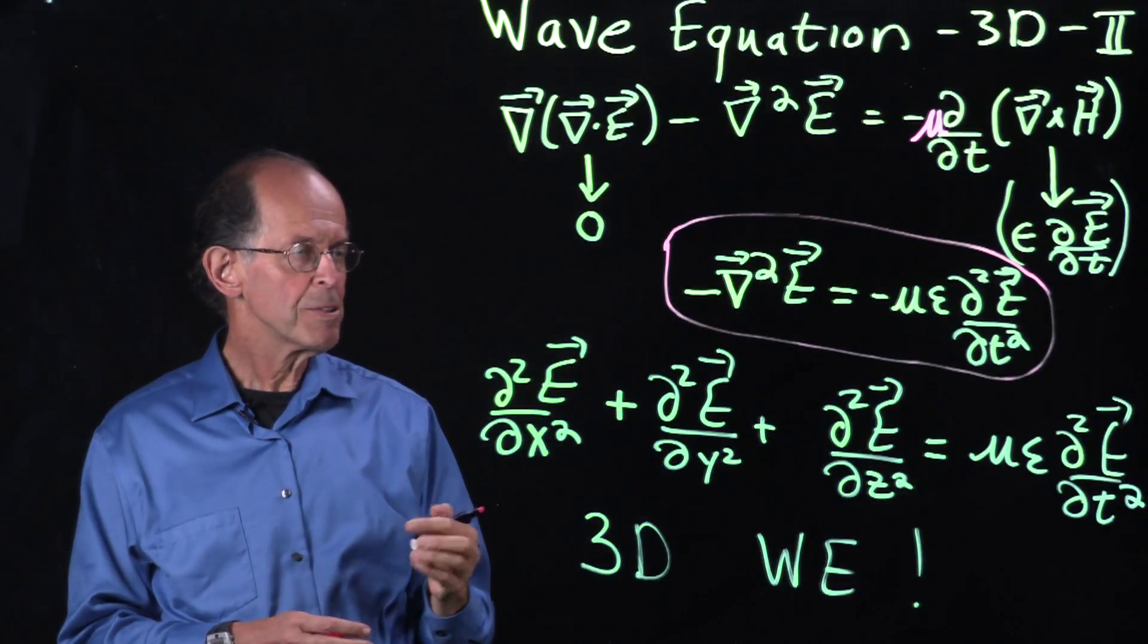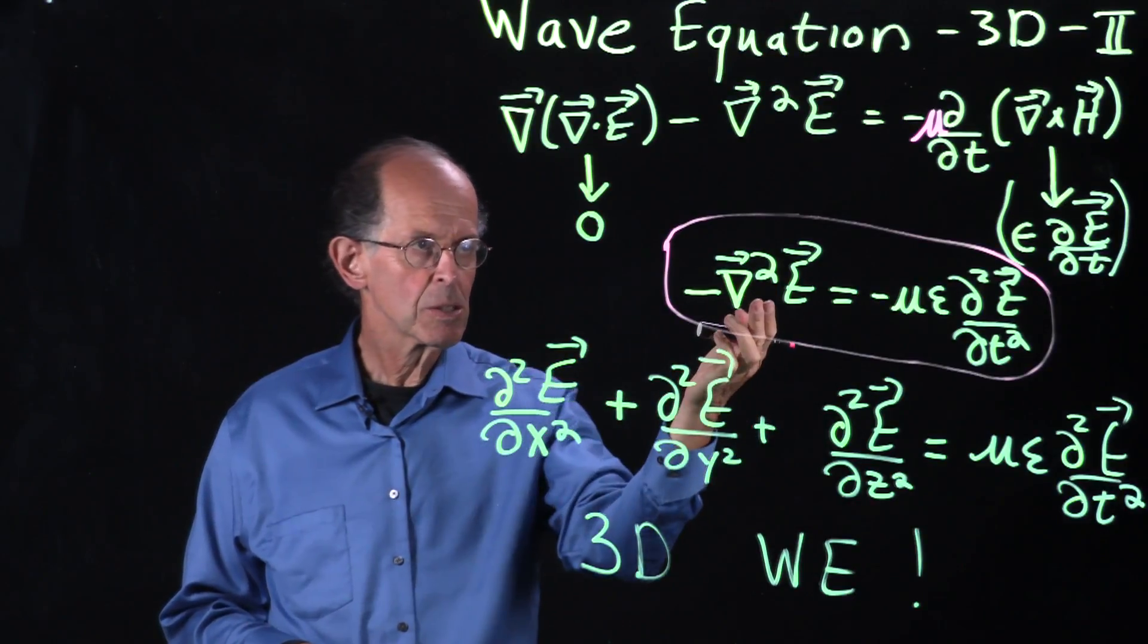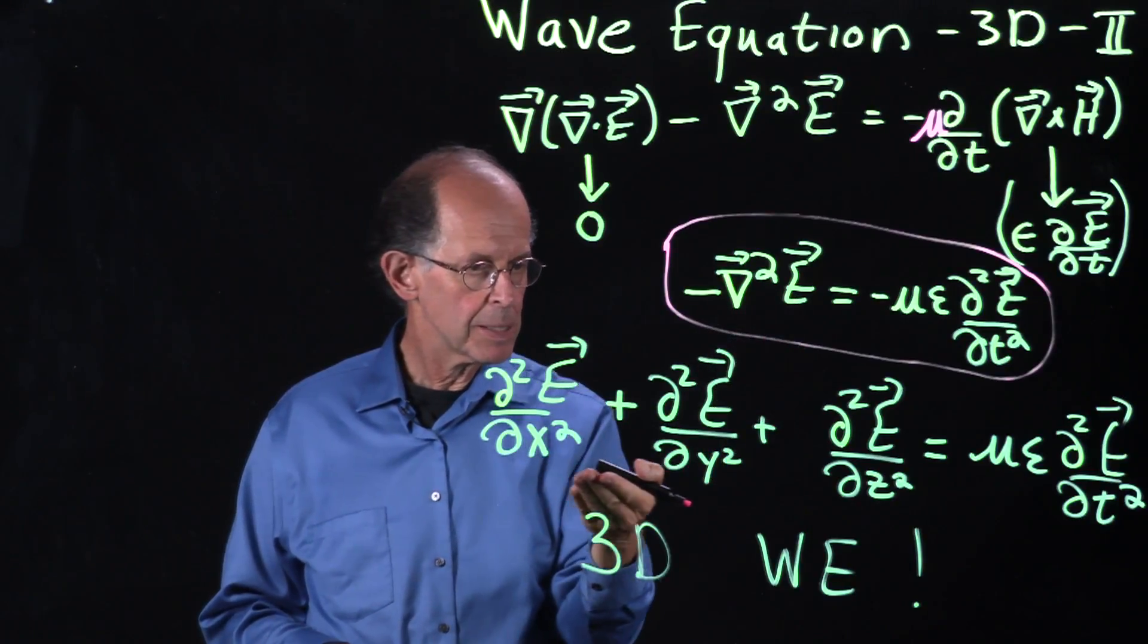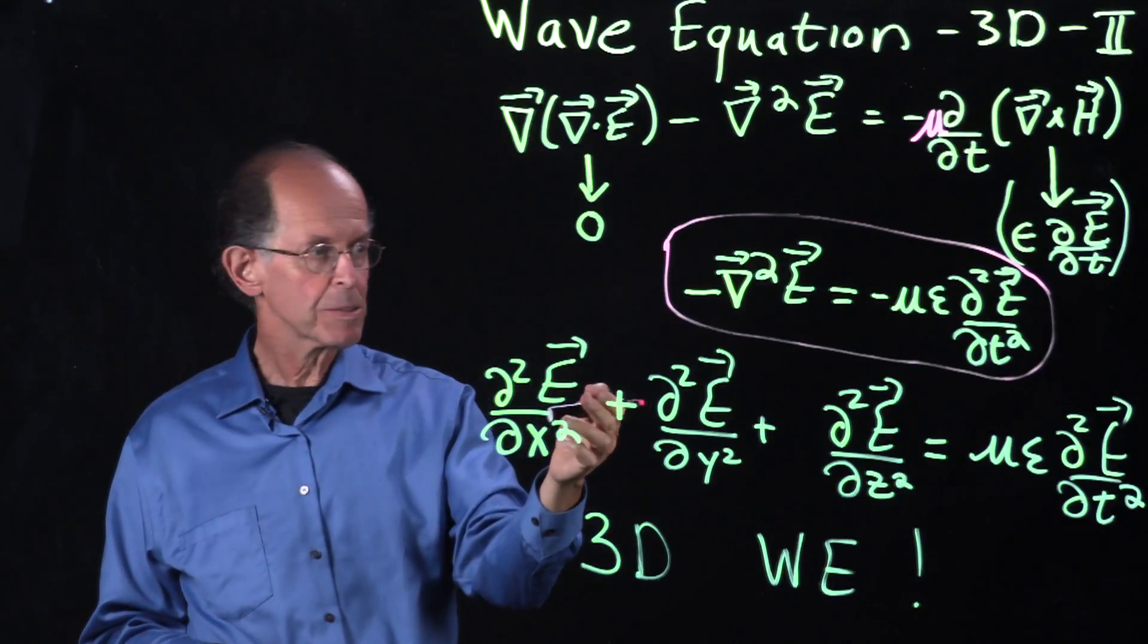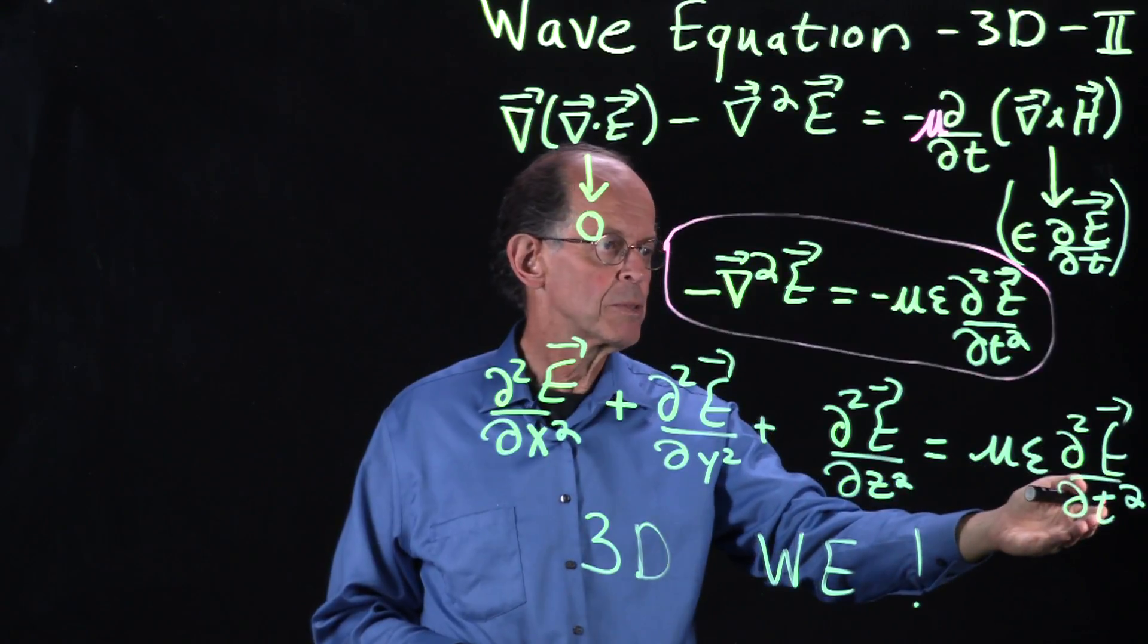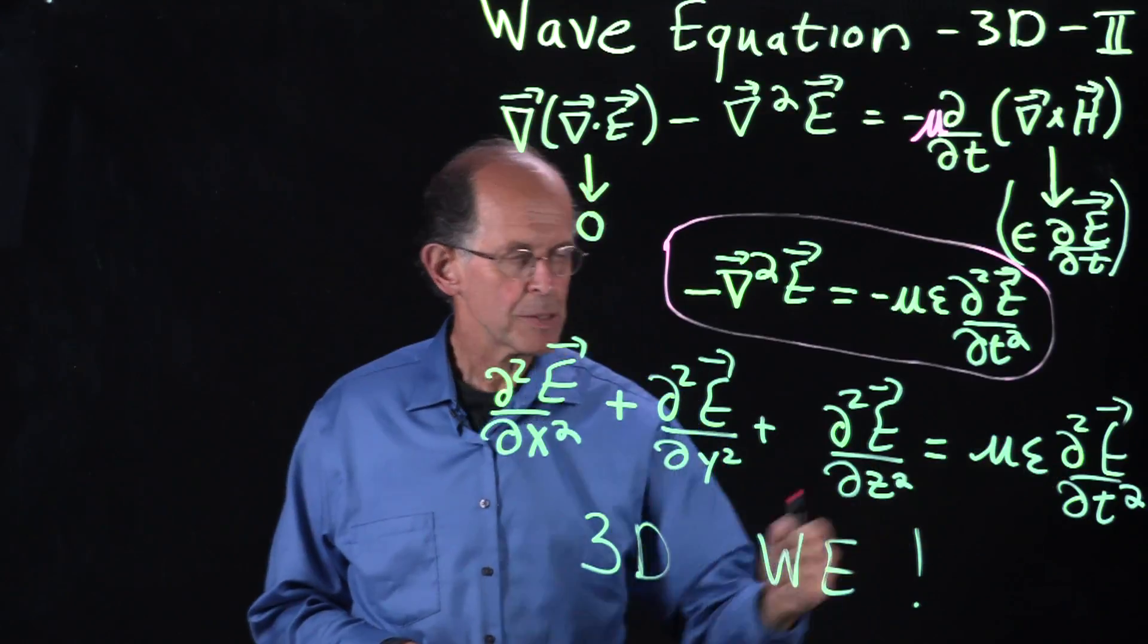Let's look at that a little further. Let's expand out what the gradient squared operator is. And here, it's all expanded out, applied to the vector E, the electric field. And on the right side, we have the second time derivative of the electric field multiplied by this.